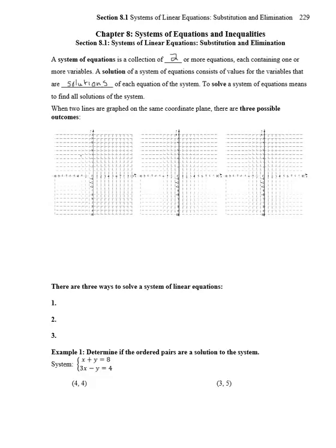If we graph two lines on the same coordinate plane, there are three possible outcomes. Either they intersect at a point, just like the two I just drew. If that happens, the solution is a single point (x, y).